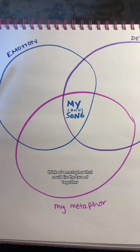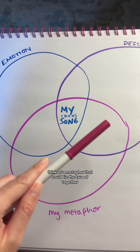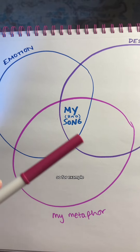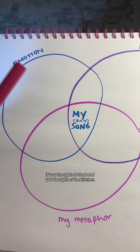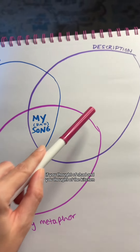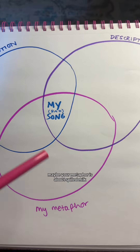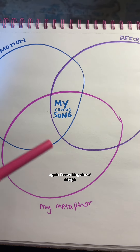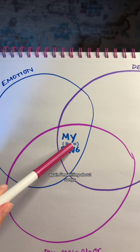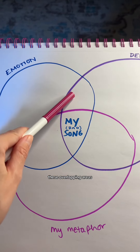Think of a metaphor that could tie the two together. For example, if you thought of 'sad' and you thought of 'the kitchen,' maybe your metaphor is about spilled milk. Again, I'm writing a bad song!